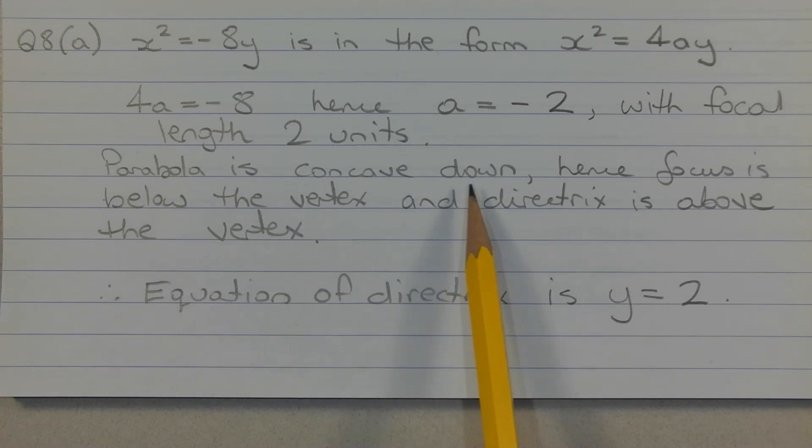Now the parabola is concave down by virtue of the negative sign here in front of the 8, hence the focus is 2 units below the vertex, and the directrix is 2 units above the vertex.